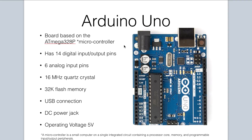The version of Arduino we will be using for our class is the Arduino Uno. It is the most popular flavor of Arduino — you can think of it as the basic model. The board is based on the ATmega328p microcontroller. When we say microcontroller, what we mean is it's a small computer on a single integrated circuit containing a processor core, memory, and programmable input-output peripherals.